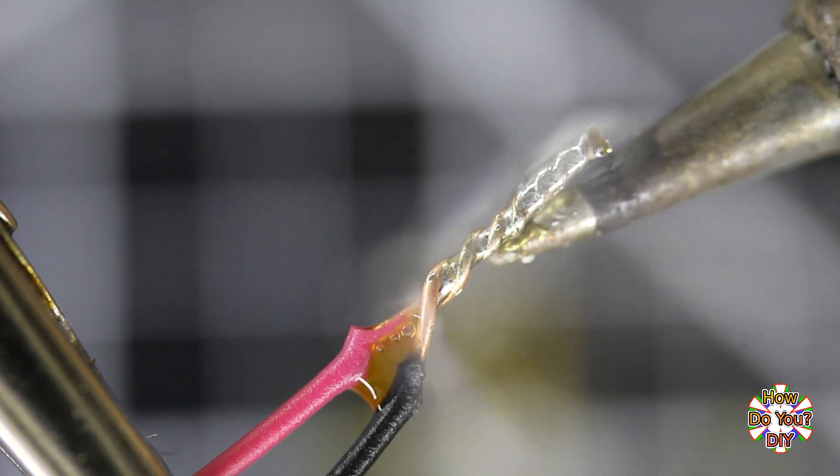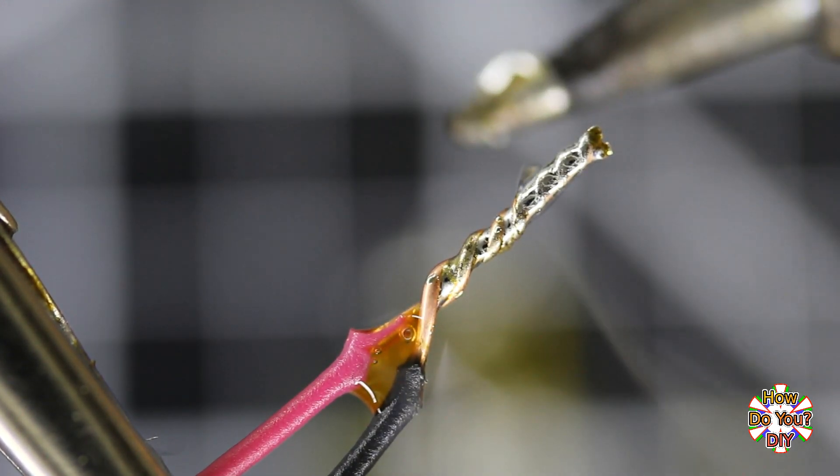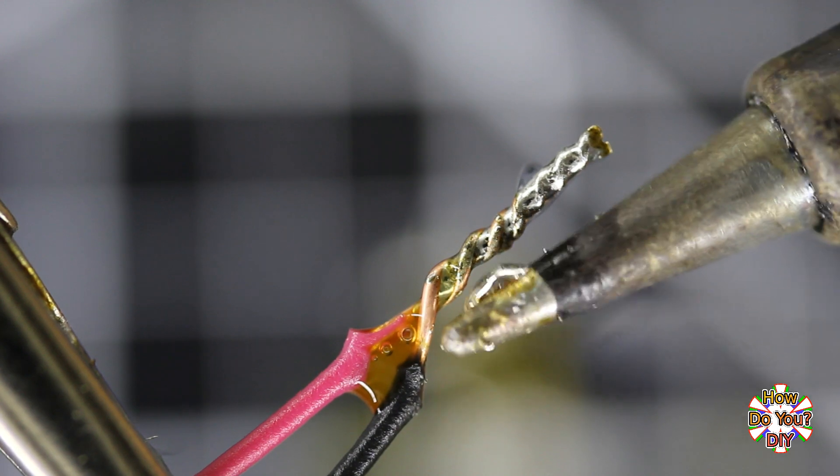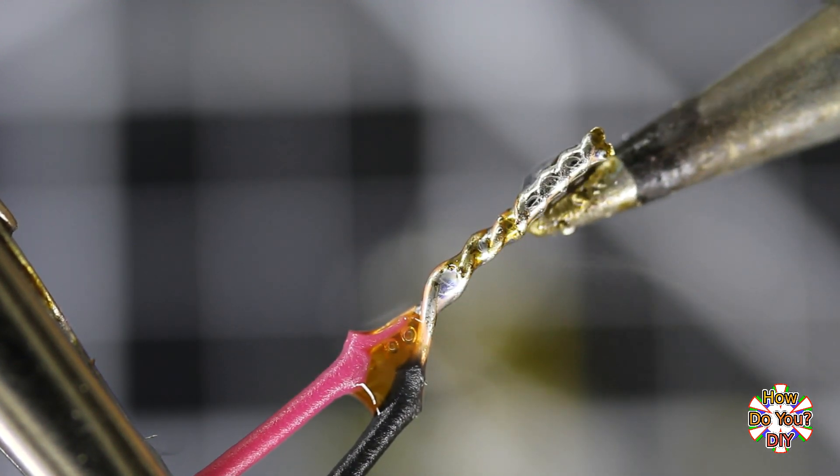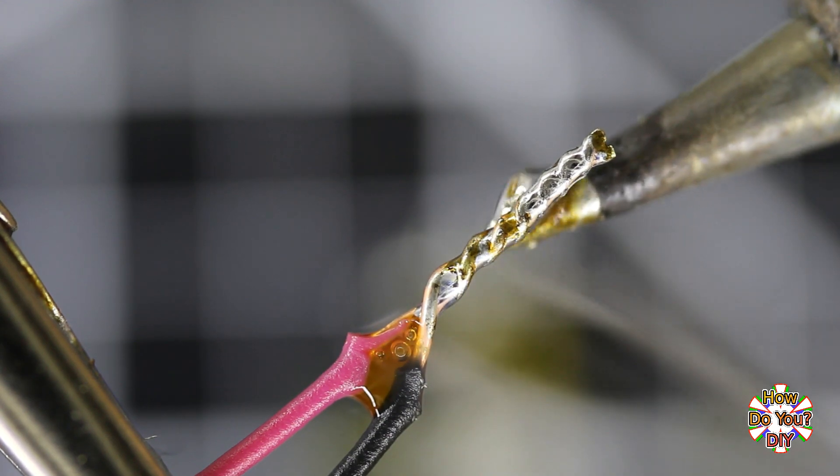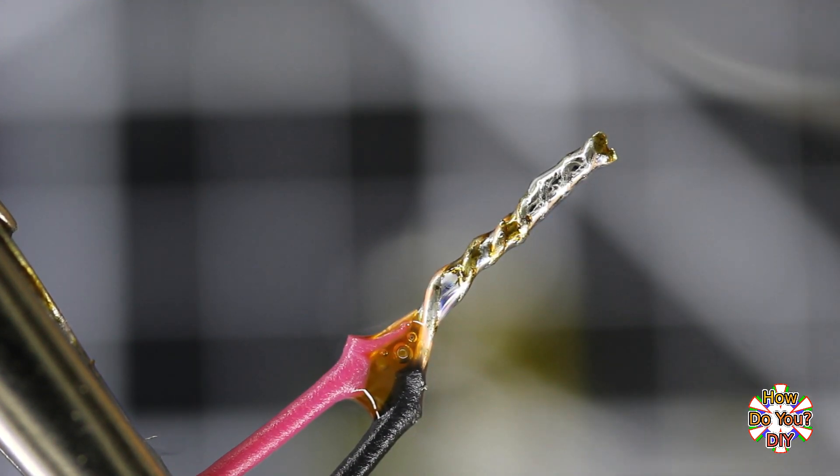Instead of just sitting on top of the twisted wires, it has soaked down with the wires. Instead of looking crusty with the skin, the solder is shiny and looks wet. The shininess will go away as the solder cools down, but that's normal.